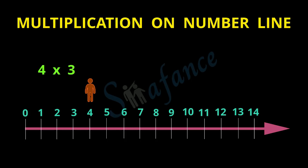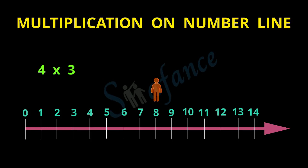We have to repeat the travel of 4 spaces 3 times. In the second repeat, the person starts from 4 and moves 4 spaces again — 5, 6, 7, 8. We have now repeated digit 4 twice and the person is at digit 8. But we have to repeat it one more time because we are multiplying 4 by 3, so the travel of 4 places must be repeated thrice.